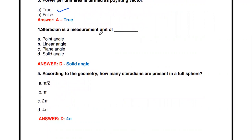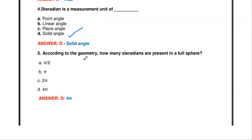Steradian is a measurement unit of — point angle, linear angle, plane angle, or solid angle? The answer is solid angle. Steradian is a measurement of solid angle.